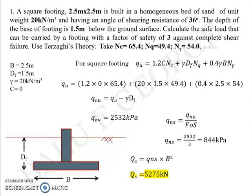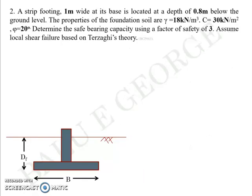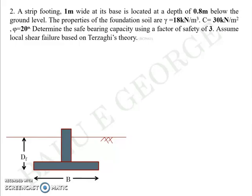Next question: you have a strip footing 1 meter wide with the foundation depth at 0.8 meters below ground level. The soil properties are given: γ, c, and φ — so it's a c-φ (cohesive-frictional) soil. You are asked to determine the safe bearing capacity using a factor of safety of 3, assuming local shear failure based on Terzaghi's equation. For local shear failure, the equation is: q_u = (2/3)·C·Nc' + γ·df·Nq' + 0.5·γ·B·Nγ'.